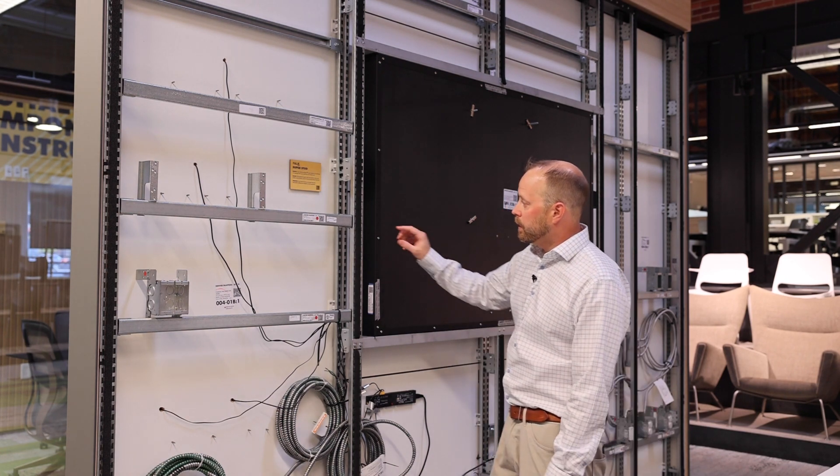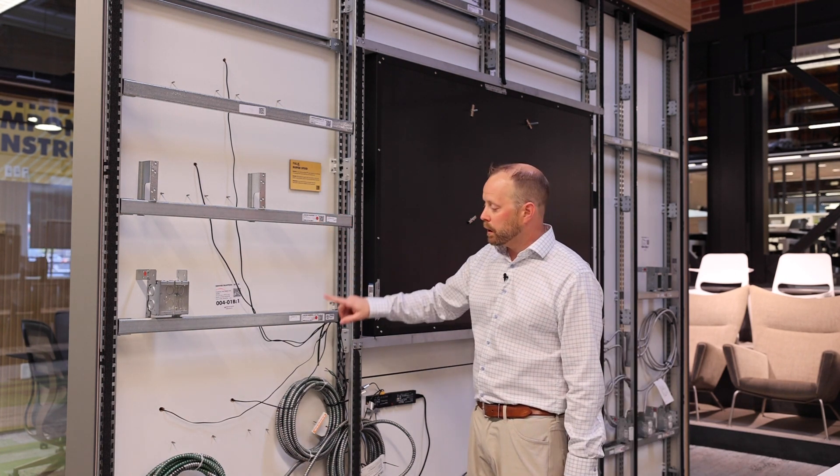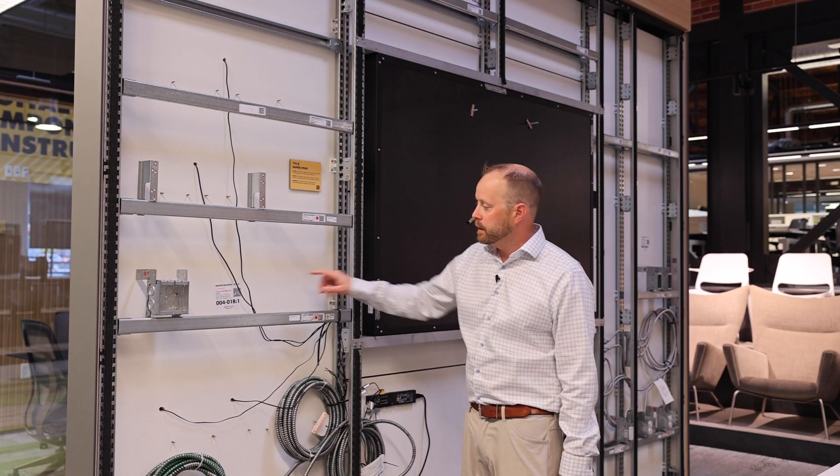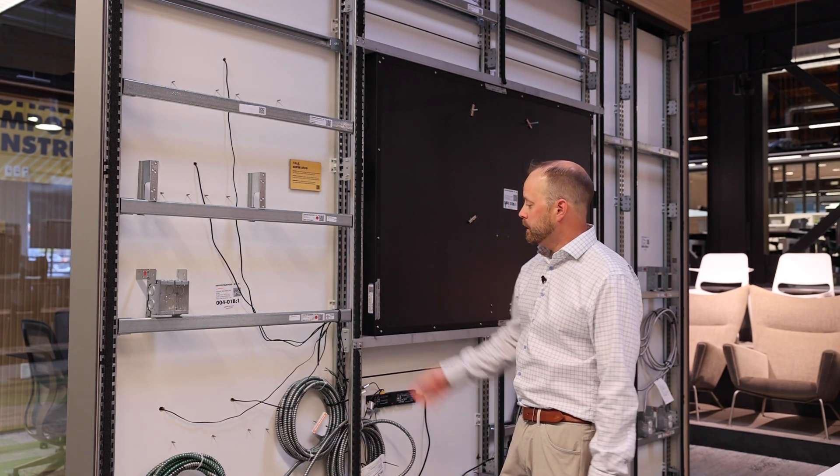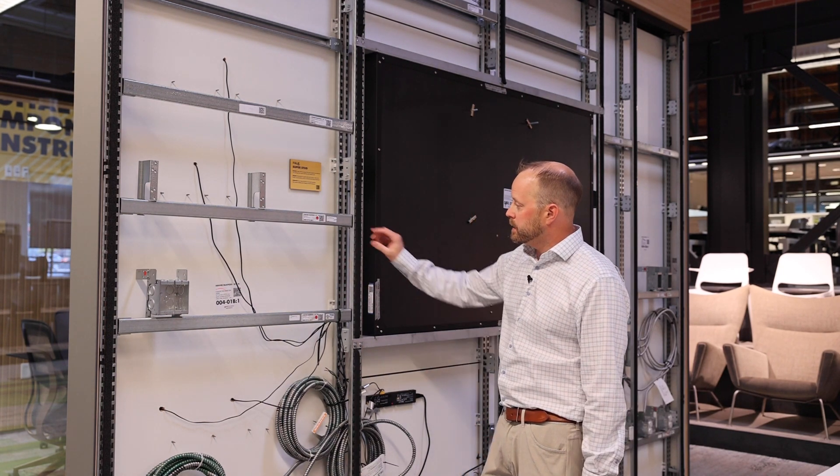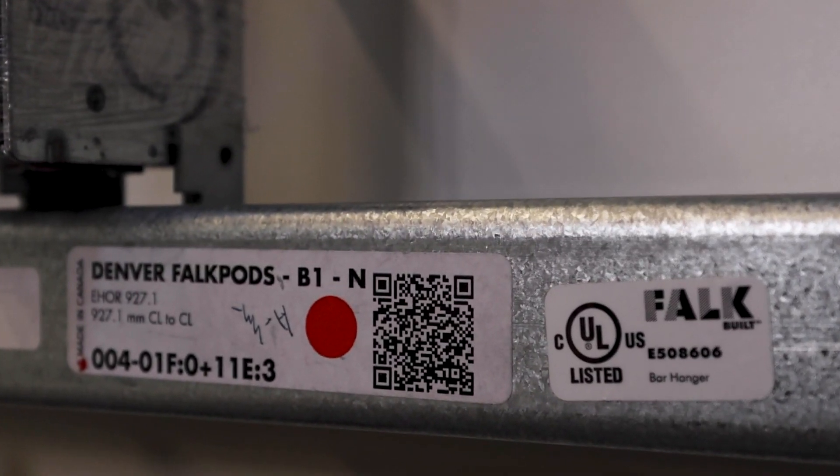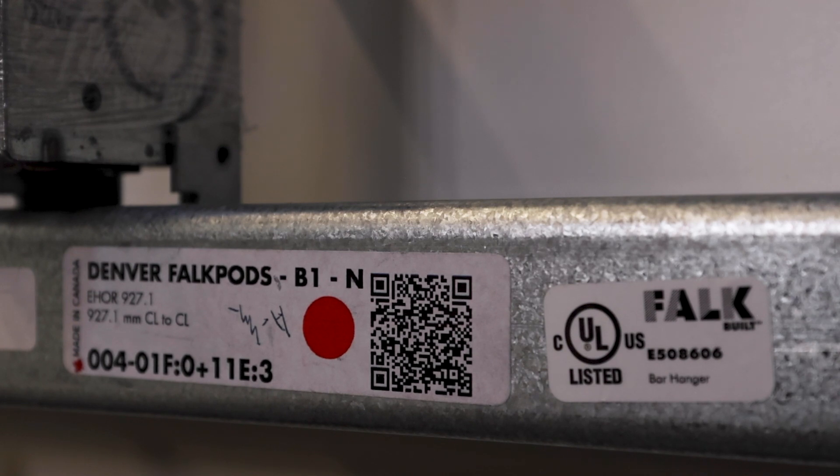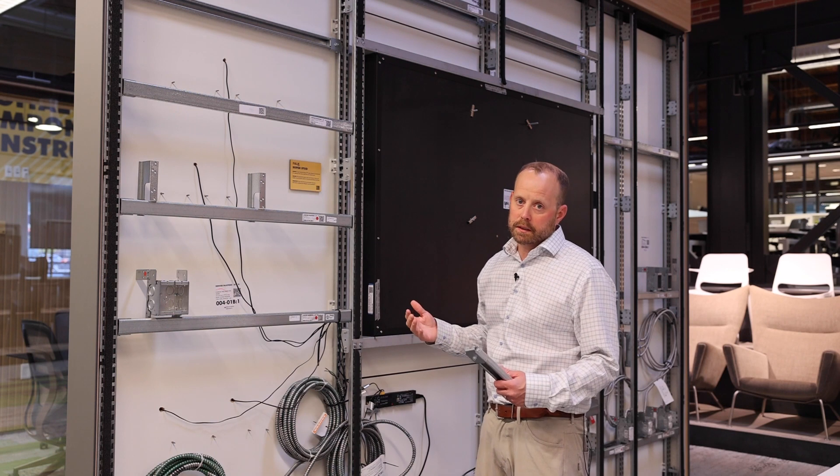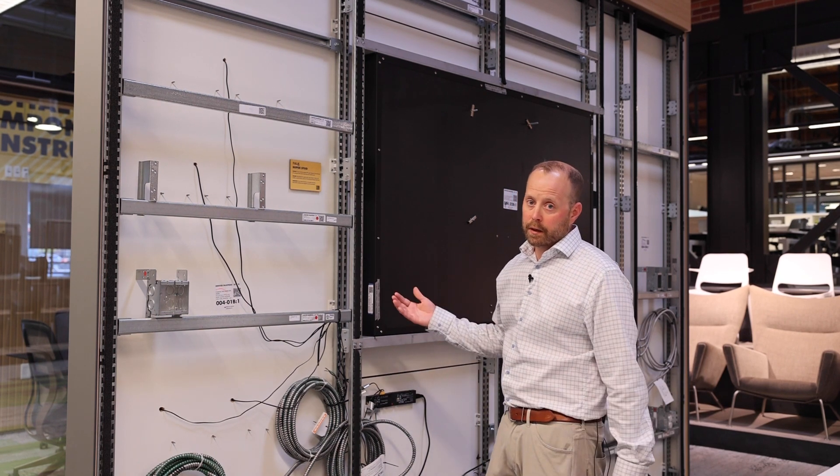You'll notice stickers with QR codes on every piece, every digital component you see. This gives us, as the local branch, visibility to where the product or solution is in the factory. We can see if our order is bundled together and loaded on the truck.